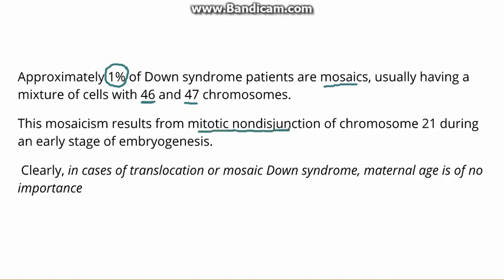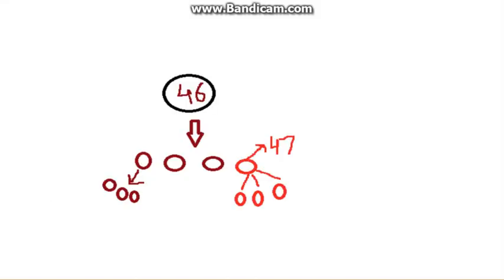Now what is mitotic non-disjunction? Mitotic non-disjunction means that after the zygote has been formed, this is a normal zygote having 46 chromosomes. When it is dividing in the early stages, sometimes non-disjunction takes place like that in meiosis and one cell gets 47 chromosomes whereas other are 46. Now when they will divide, this will lead to mosaicism in the body with both types of cells present, both with 46 chromosomes as well as 47 chromosomes.